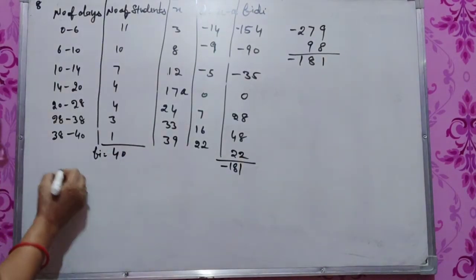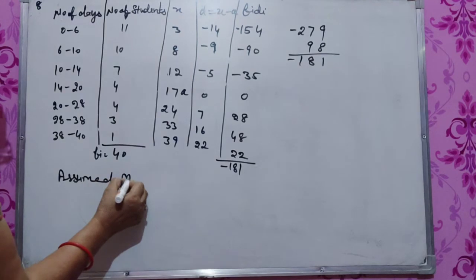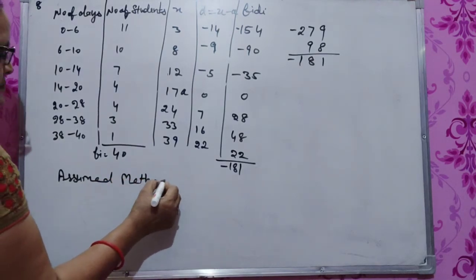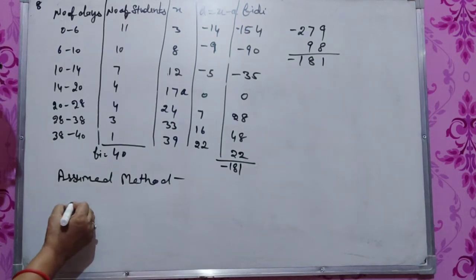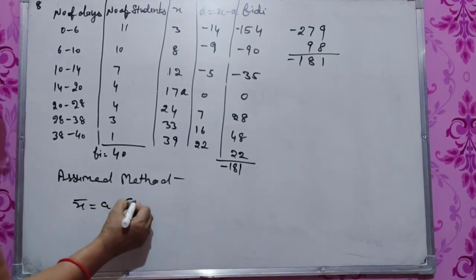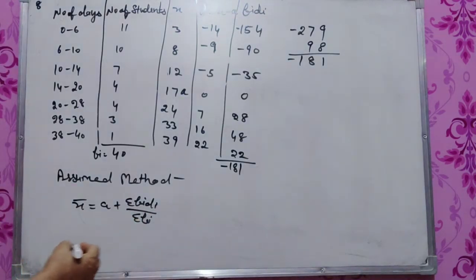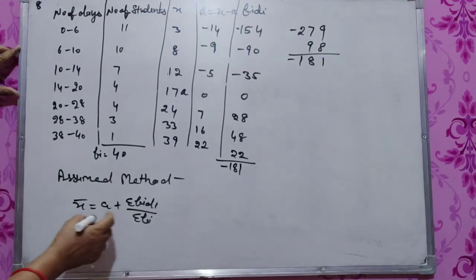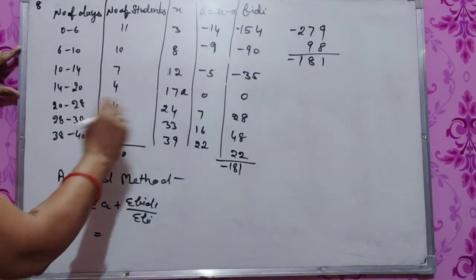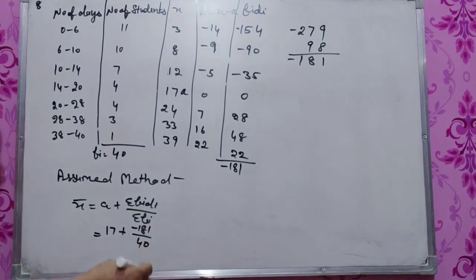Now we'll find the mean by assumed method. X bar equals A plus sigma f i d i by sigma f i. This is 17 plus minus 181 by 40.